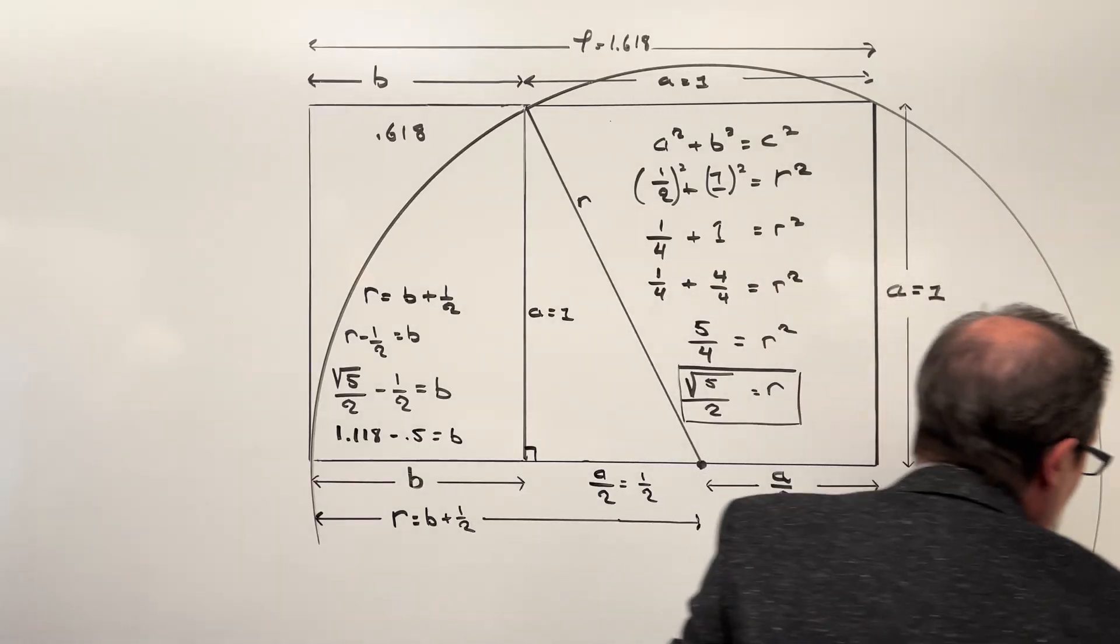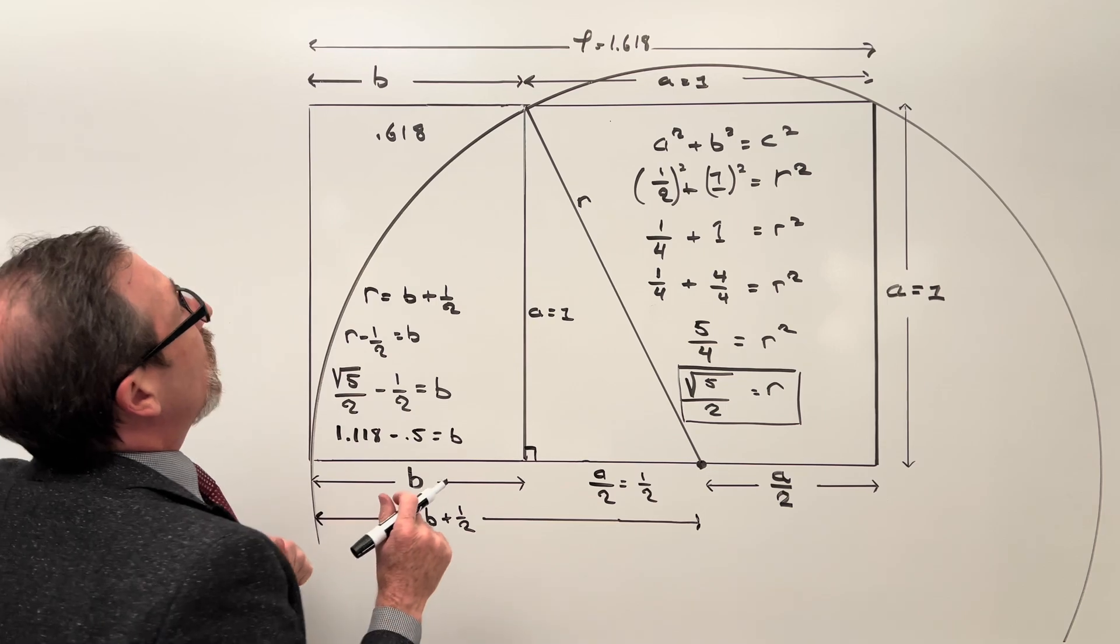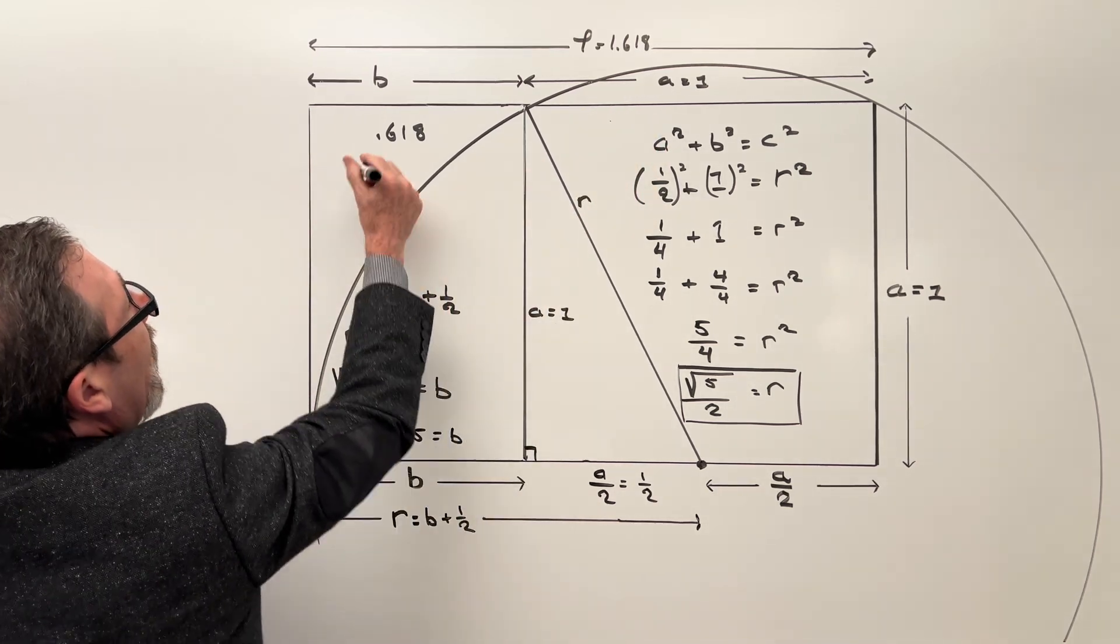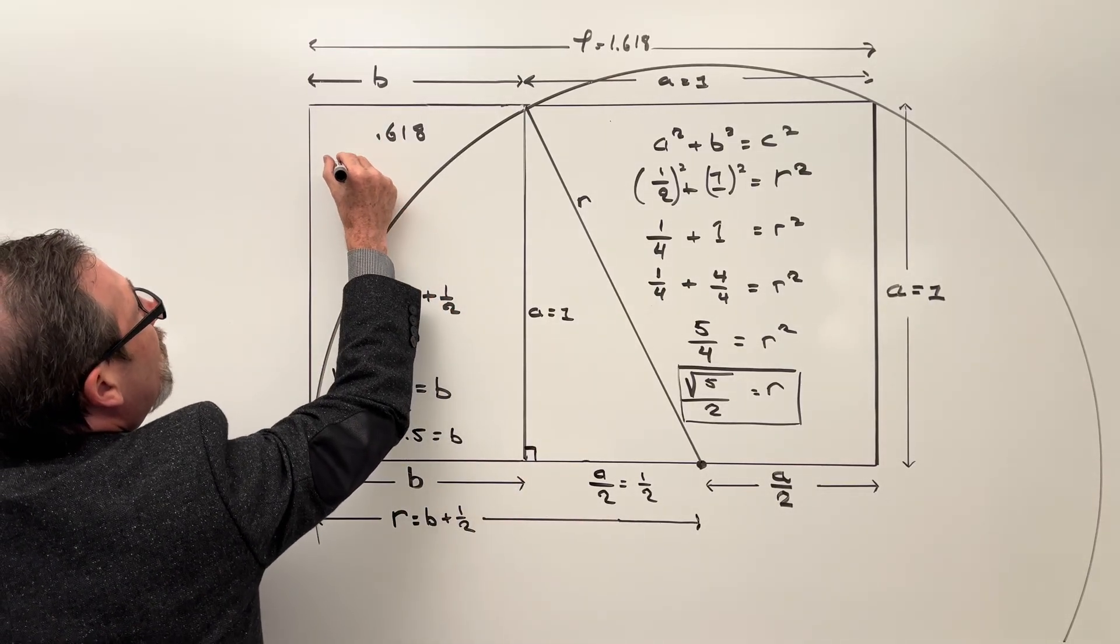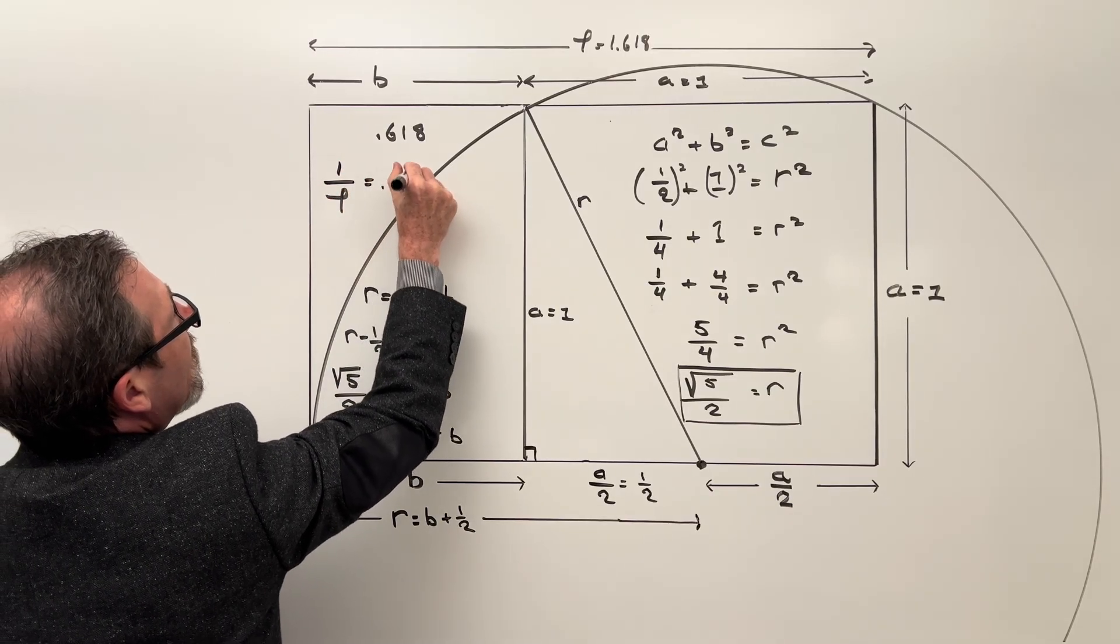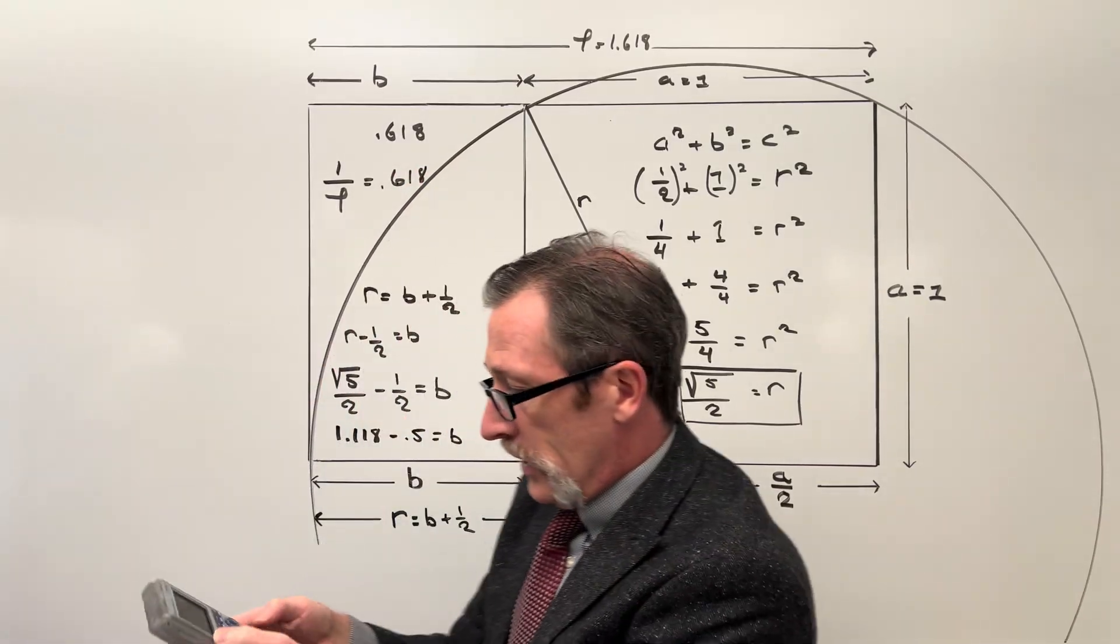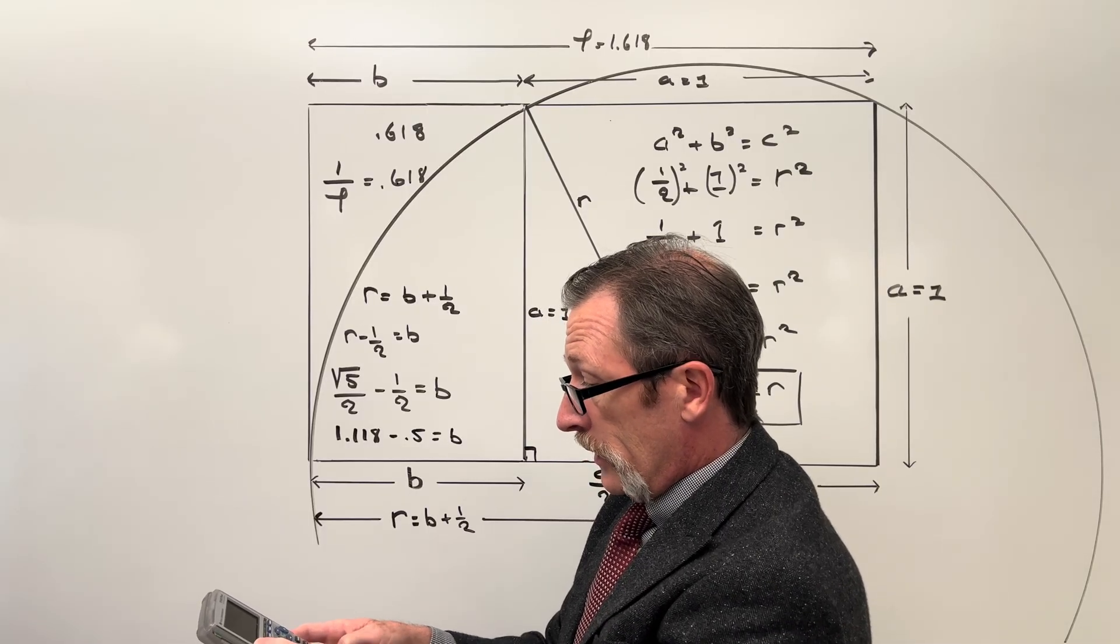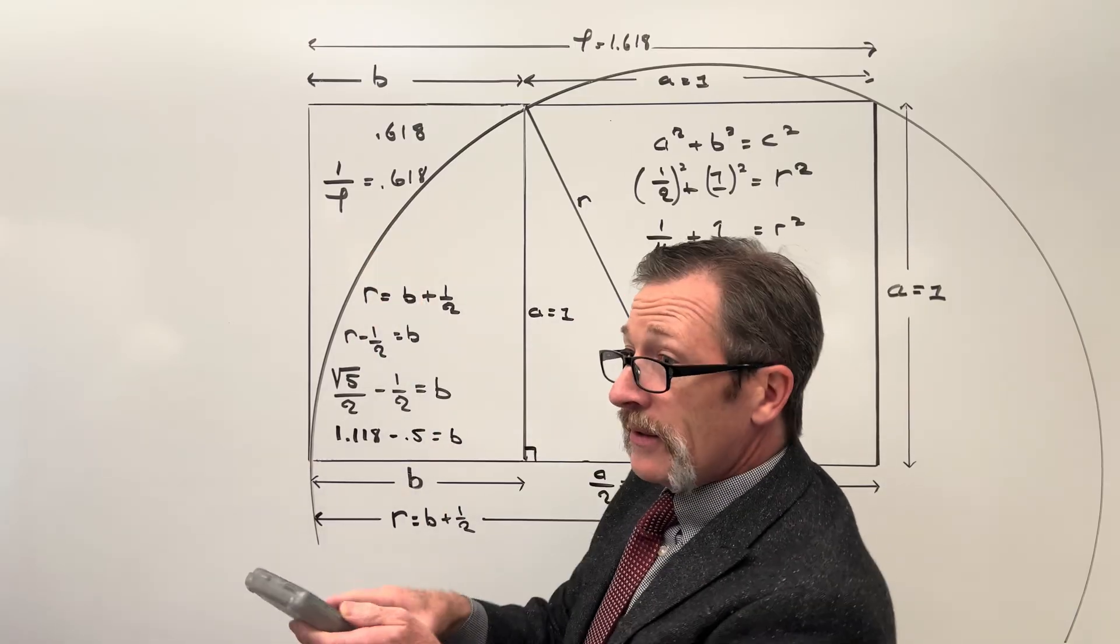Once we know that, we can say, B, which is that golden ratio, is going to simply be one plus B. And if you remember, this 0.618 came about because it happens to be one all over our phi was 0.618. And I'll just show you that again. I'll put that in my calculator. And I can say 1.618. And I'll take the inverse of that. And I get 0.618.